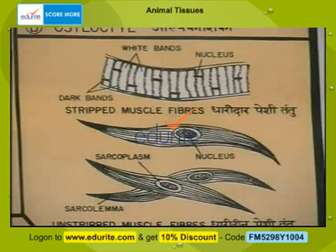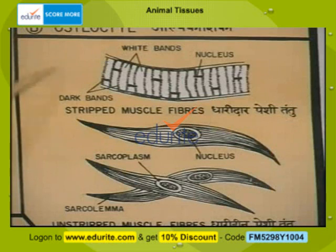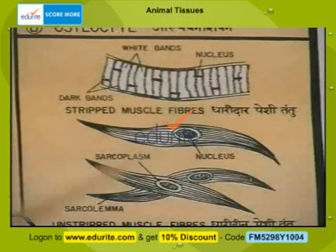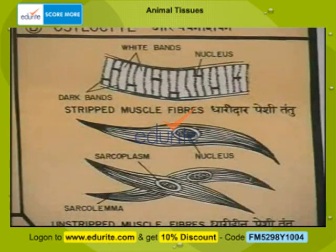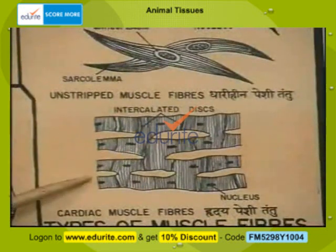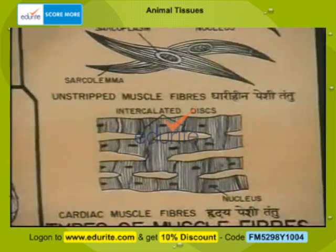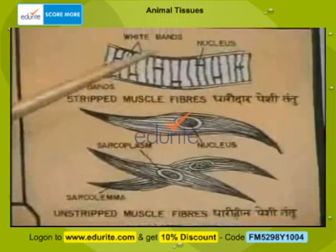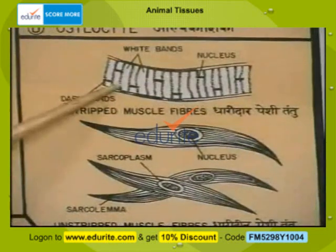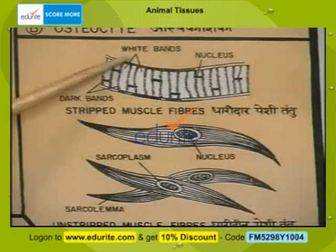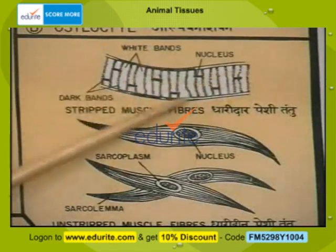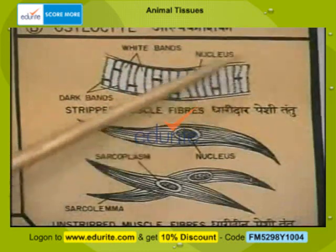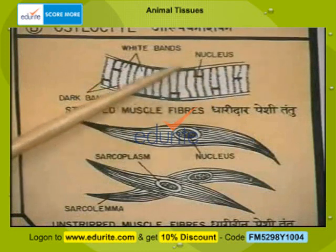One other kind of animal tissue is the muscle tissue. There are three kinds of muscle tissues: the striated or striped muscle fiber, the smooth or non-striated muscle fiber, and the cardiac muscle fiber. Striated muscles are also called voluntary muscles. These are found attached to the bones and respond to voluntary thinking. Striated muscle fibers are long, cylindrical, and show a number of crossed striations, with several nuclei in each muscle fiber.